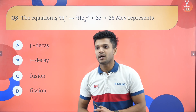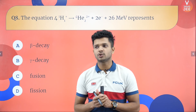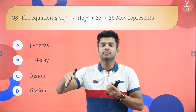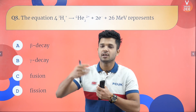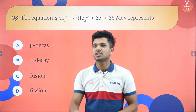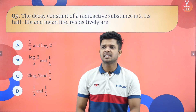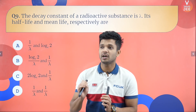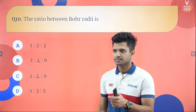Four hydrogen atoms combine to form one helium atom, with two electrons and energy being released. This phenomenon — combining lighter nuclei into a heavier nucleus of higher binding energy per nucleon — is called nuclear fusion. The splitting of a large nucleus into two lighter nuclei is fission. Next: the decay constant is λ. The half-life is ln2/λ and mean life is 1/λ — option B.